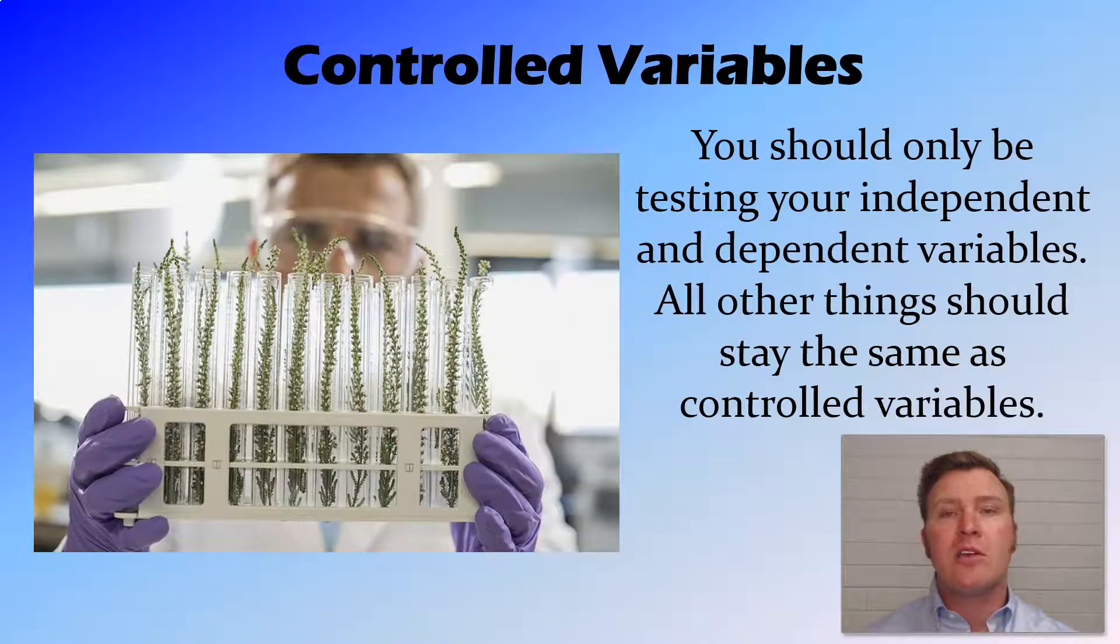The first one is by using controlled variables. So you should only be testing two variables, changing your independent and measuring your dependent. All other variables in your experiment, all other things that could change, should stay the same.